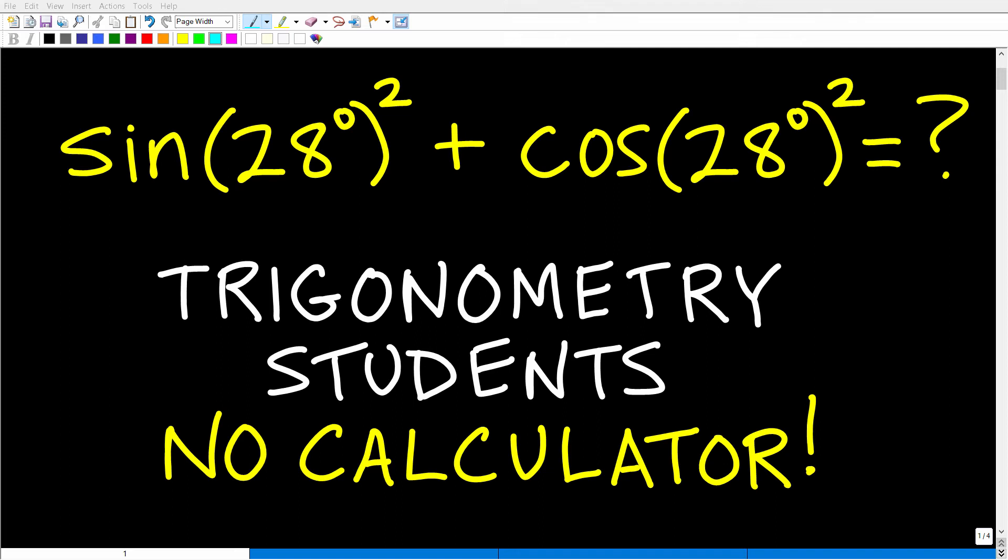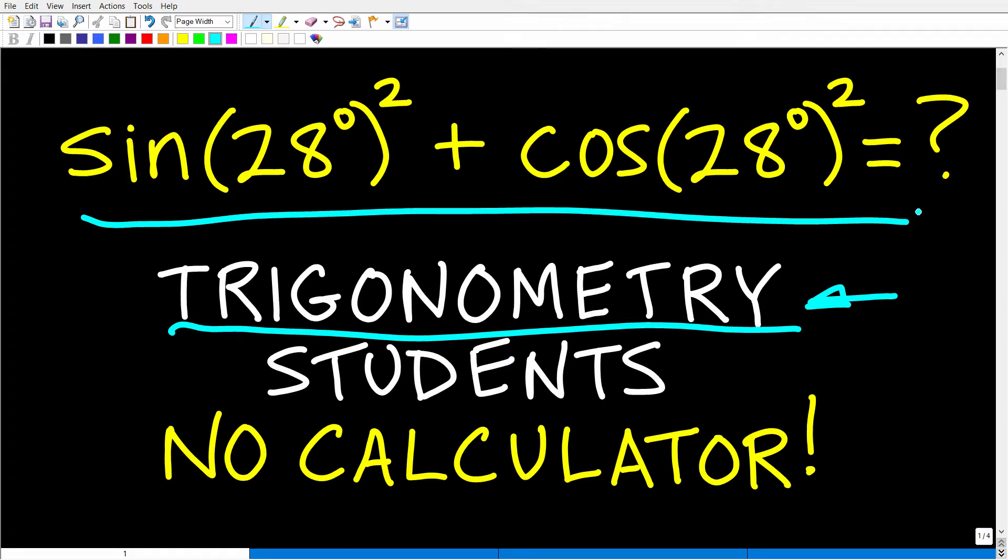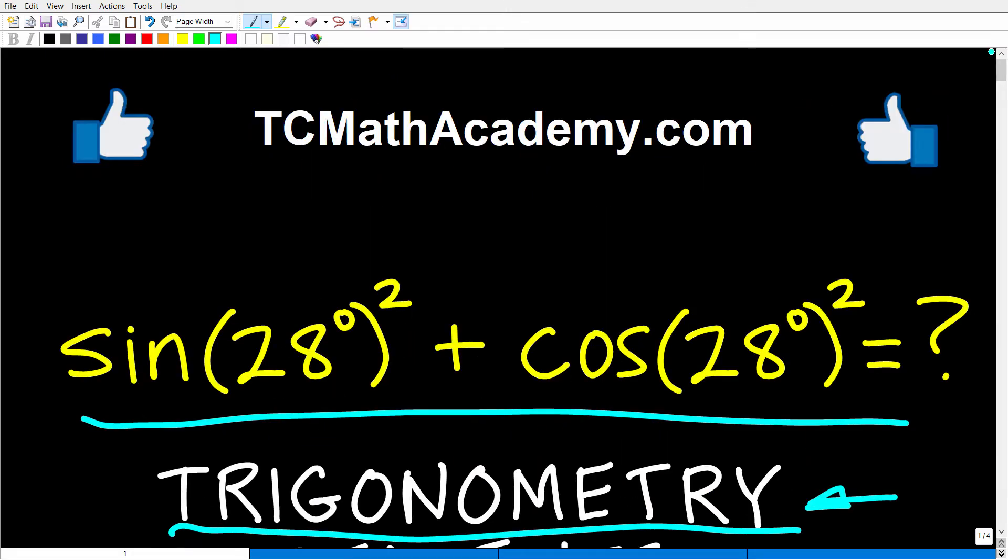Okay, so if you are studying trigonometry, or maybe you've already studied trigonometry, oftentimes when you study trigonometry, you don't study it as a standalone course. Sometimes you do, but it's more often to study trigonometry as part of a course like pre-calculus or maybe college algebra. But nevertheless, you should be able to answer this question if you have a strong knowledge of trigonometry without using a calculator. And the question is sine 28 degrees squared plus cosine 28 degrees squared. What is this equal to? Again, no calculator. And if you know the answer, go ahead and put that into the comment section.